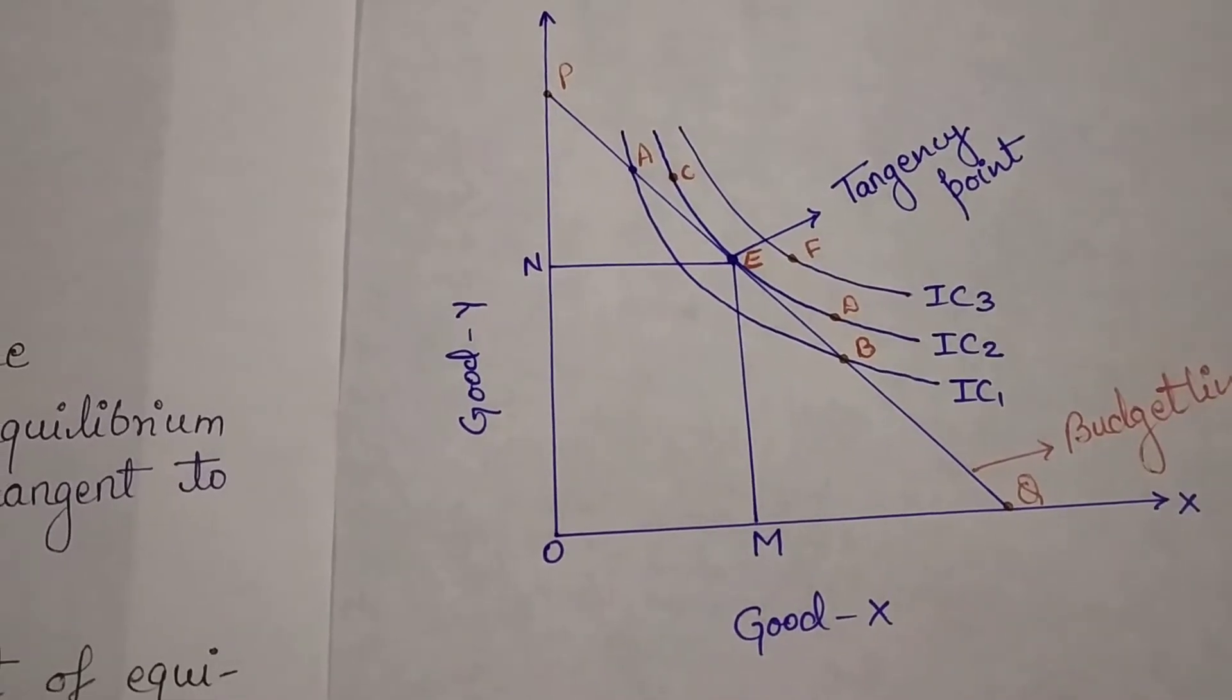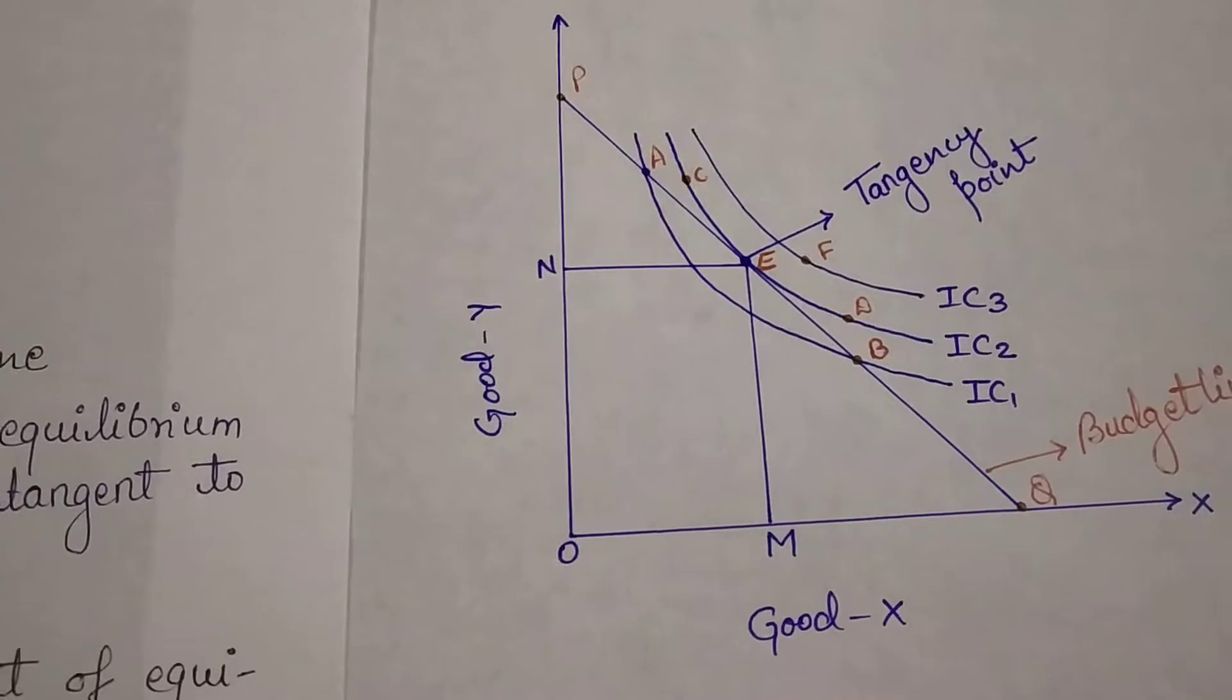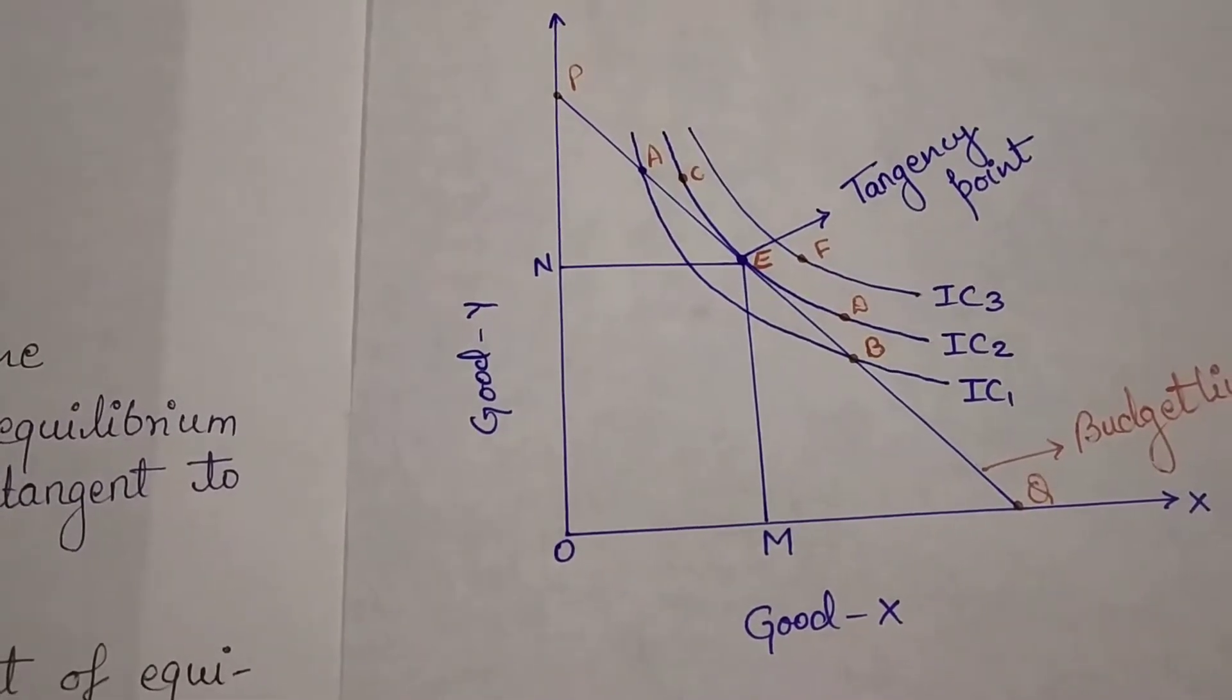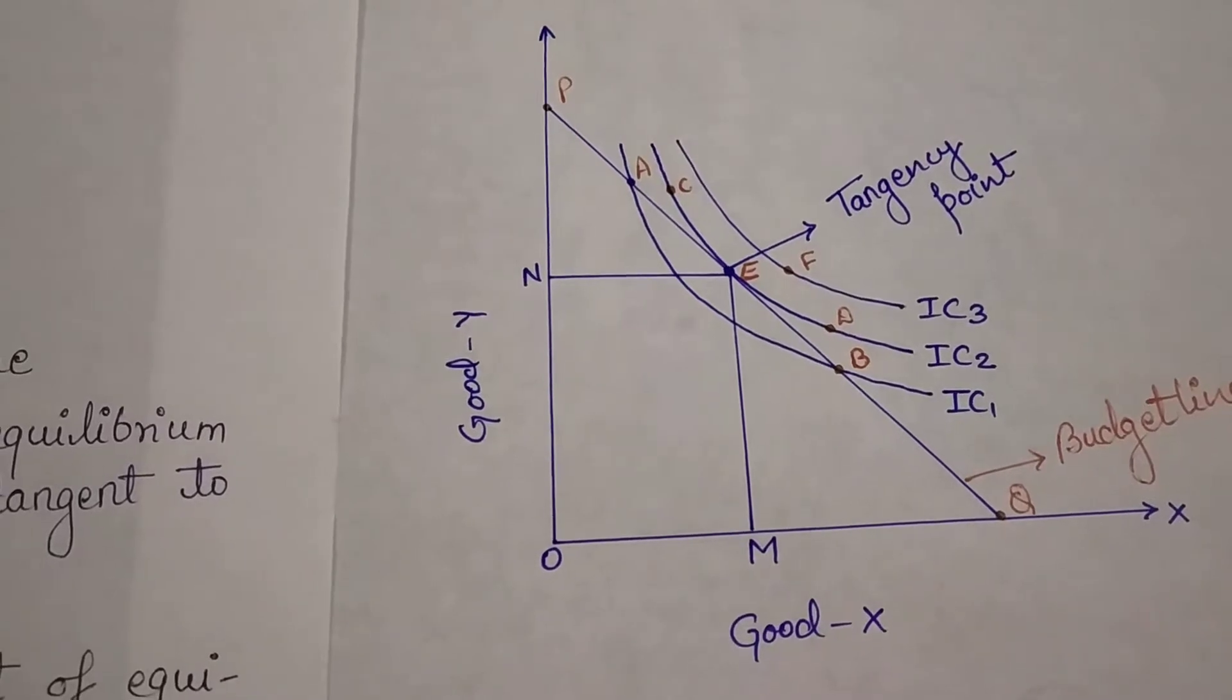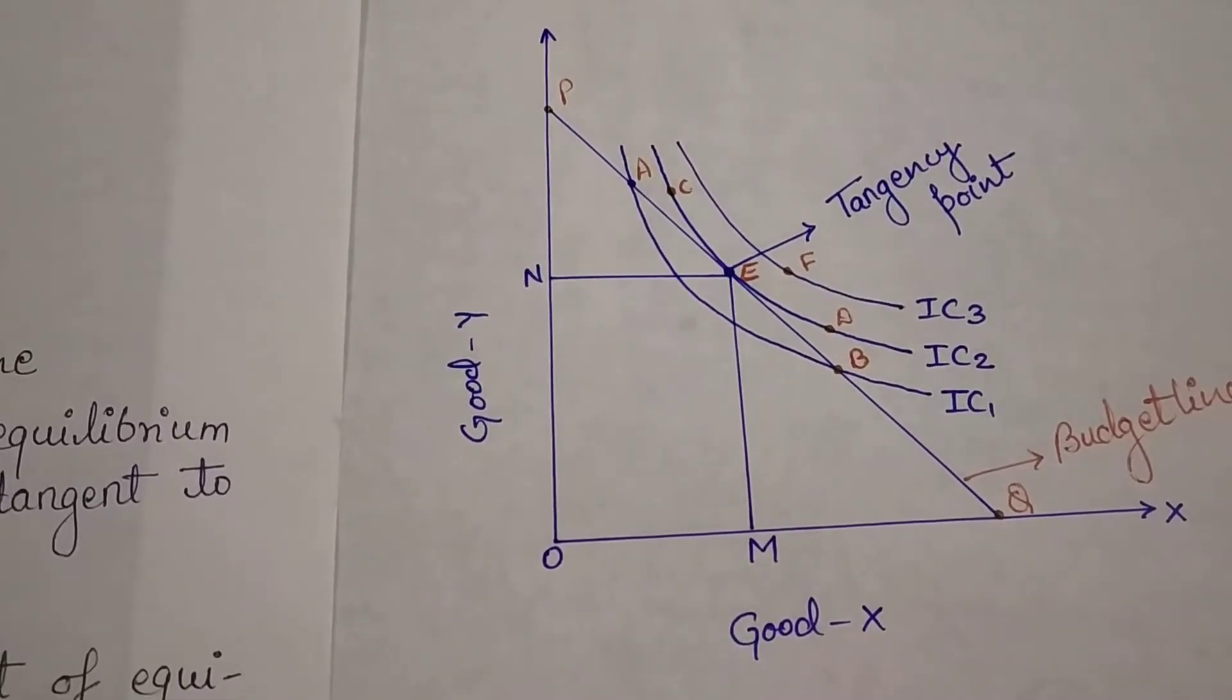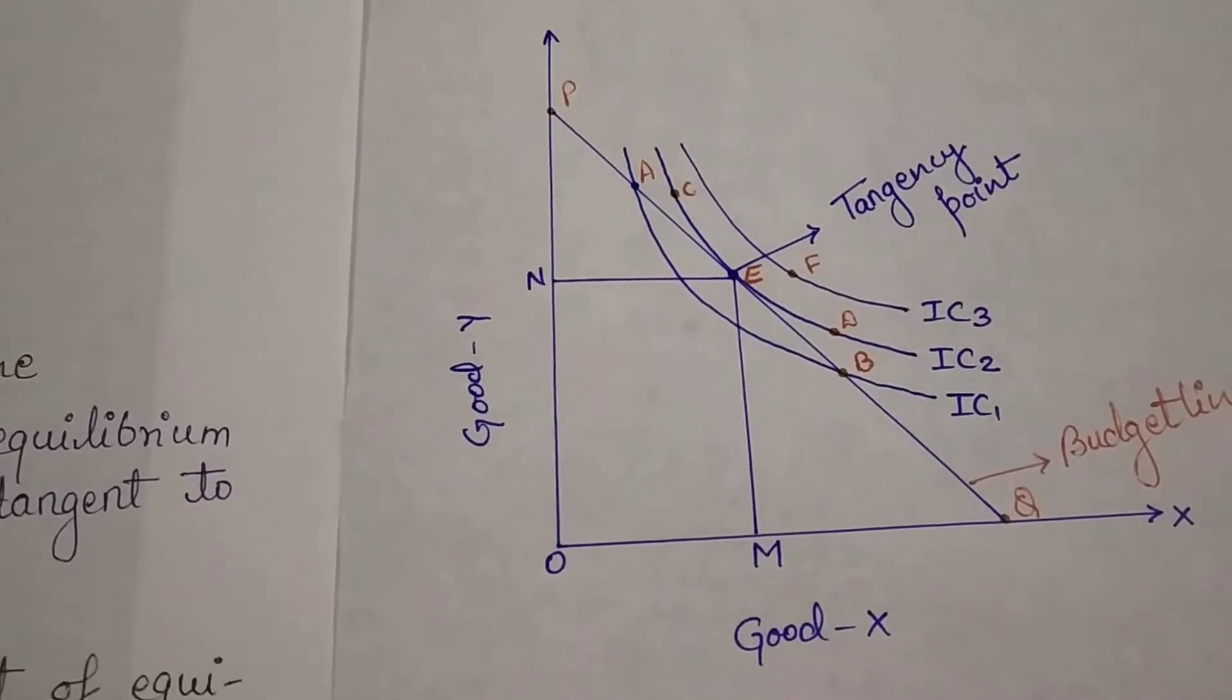Why? Because higher the IC curve, higher level of satisfaction. So on IC1 curve, there is no equilibrium point. We are not attaining equilibrium. On points A and B, both the curves are intersecting each other, but both of the conditions are not satisfying.